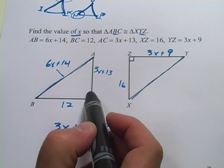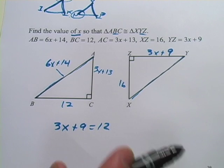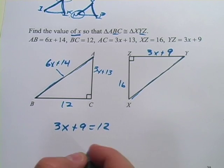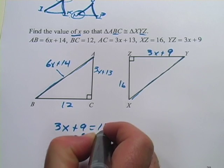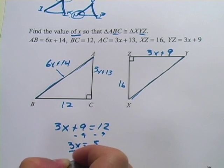I could also have done it this way. Side AC corresponds to side XZ. Maybe we'll do that one just for practice in a minute. But let's solve this one first. I'm going to subtract 9. I get 3x equals 3. Divide by 3. We get x equals 1.